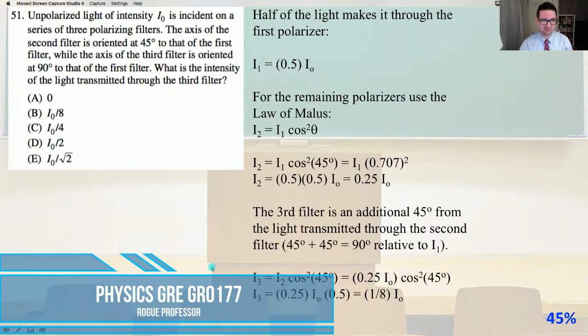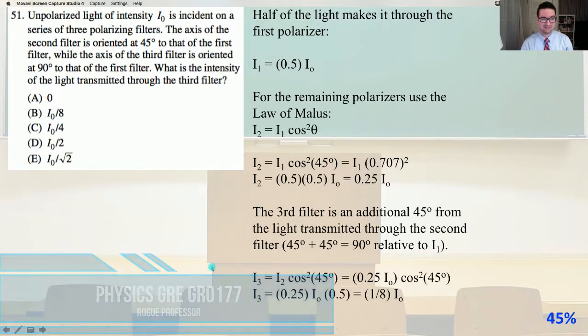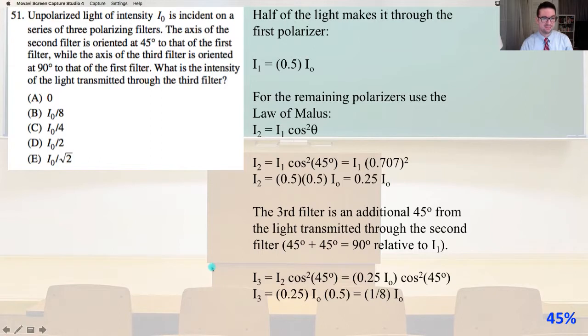We are on our merry way through Physics GRE GR 0177 solutions on number 51. Unpolarized light of intensity I₀ is incident on a series of three polarizing filters. The axis of the second filter is oriented at 45 degrees to that of the first filter, while the axis of the third filter is oriented at 90 degrees to that of the first filter. What is the intensity of the light transmitted through the third filter?